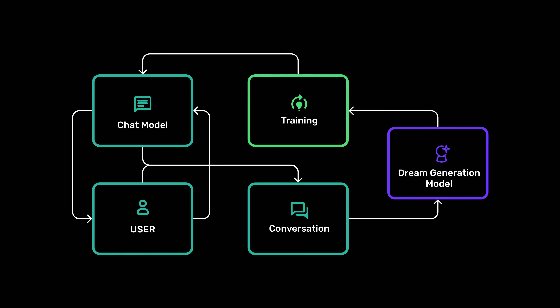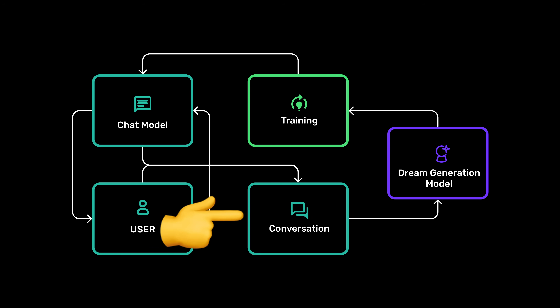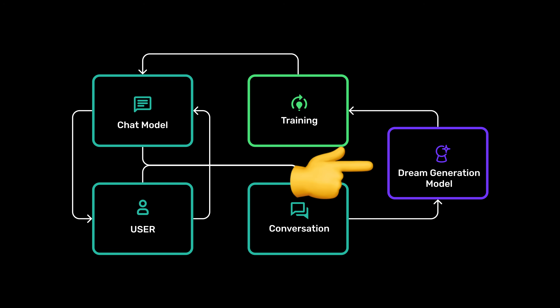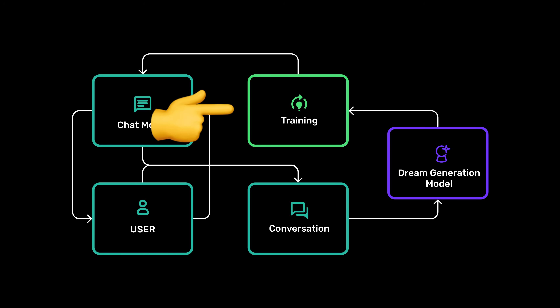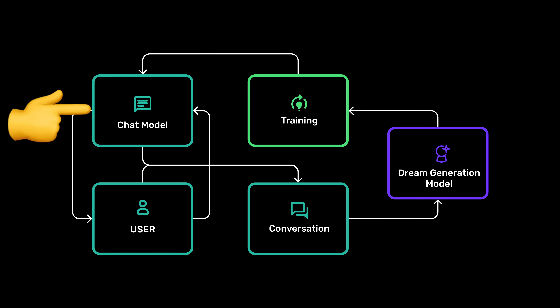Now that we can generate dreams, the pipeline is essentially pretty simple. We start with a normal conversation between an LLM and a user. Every few messages we take the conversation and pass it through our dream generation model. Then we take those dreams and fine-tune the original LLM on them. Let's see if this works and if the LLM can learn and remember things from our conversation.